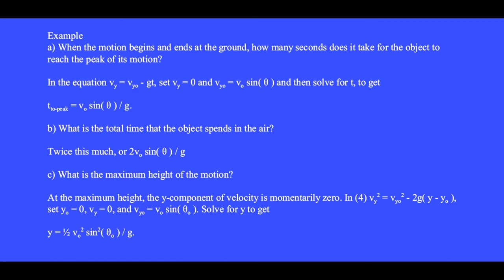In the equation v_y equals v_y0 minus g t, we set the final speed v_y equal to zero, and the initial speed v_y0 equals v₀ sin(θ₀). And then solve for t to get the time to the peak is v₀ sin(θ) divided by g.